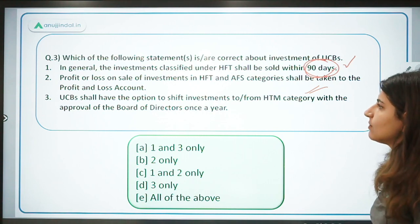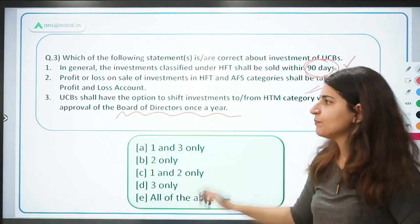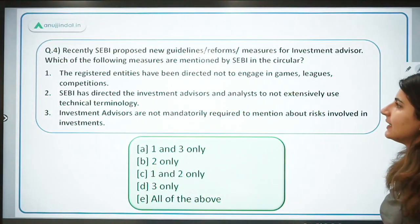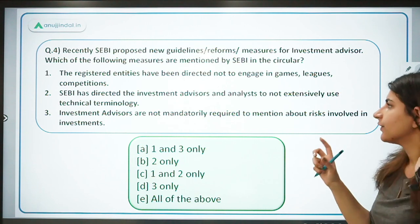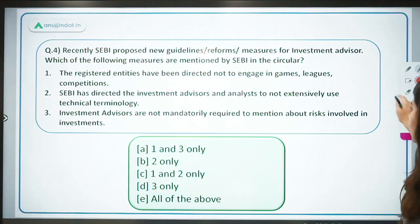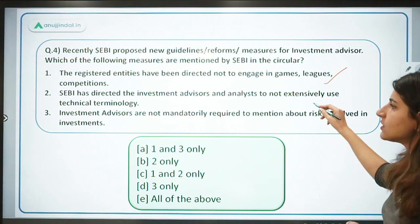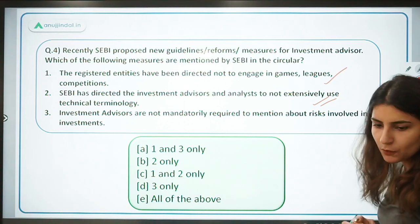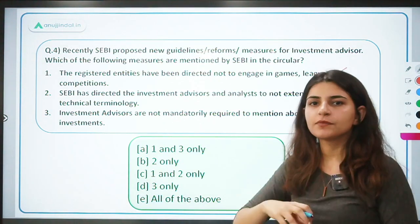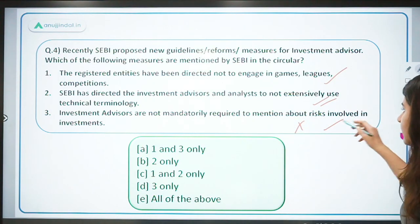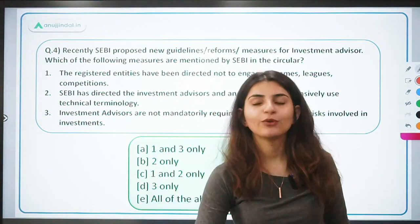For the classification of UCB investments: securities acquired to hold until maturity go in HTM — correct. Investment under HTM shall not exceed 25 percent of total investment, but can be exceeded under certain circumstances — correct. UCBs cannot invest in long-term bonds of infrastructure companies — incorrect, they can, subject to a seven-year residual maturity condition. For HFT: investments must be sold within 90 days — correct. Profit and loss on HFT and AFS go to the P&L account — correct. UCBs can shift investments to and from HTM with Board of Directors' approval once a year — correct. Thank you for joining this session.